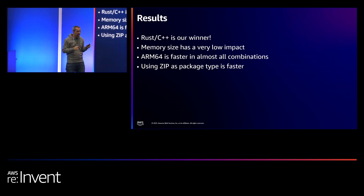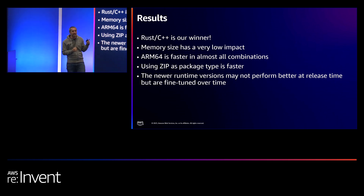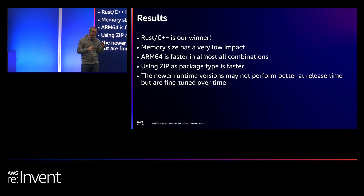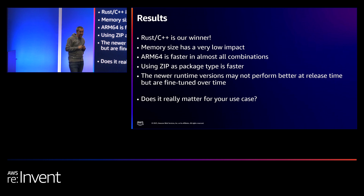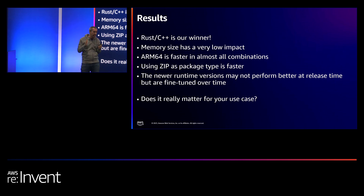ARM is faster in all combinations — one recommendation: if you're not using architecture-specific binaries, please use ARM64. It's basically a one-line change in your infrastructure-as-code. ZIP packages are faster than OCI images, at least for hello world — that may not hold for more complex architectures. Newer runtimes may not perform better at release time but are fine-tuned over time: for instance, Node.js 20 is currently outperformed by Node.js 18, but Node.js 18 similarly outperformed Node.js 16 over time.